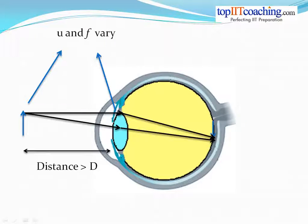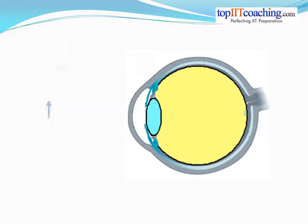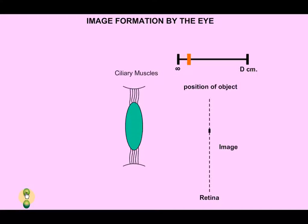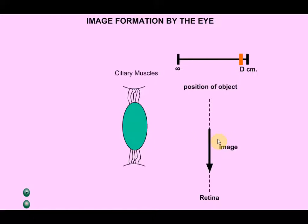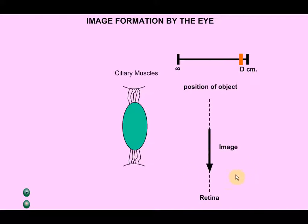Another interesting point about the eye is that the image formed by the eye is always real and inverted — it's at the retina, real and inverted. As you can see, the inverted image. As the object is brought closer and closer to the eye, the size of the image increases up till a distance D, which is the least distance of distinct vision. Let's have a look at an animation that will show even more clearly how the eye forms an image. As you can see in this animation, as the distance of the object from the eye is changed from infinity to D, the eye keeps expanding at the center, the ciliary muscles are contracting, the lens gets bigger in power, and the image size is also getting bigger, with the image being formed on the retina.